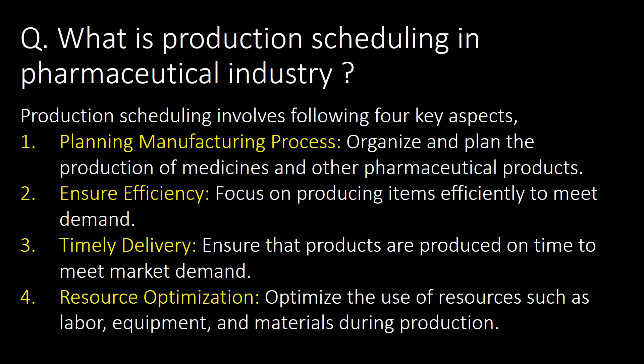What is production scheduling in the pharmaceutical industry? Production scheduling involves four key aspects: first, planning the manufacturing process — organizing and planning the production of medicines and pharmaceutical products; second, ensuring efficiency in producing items to meet demand; third, timely delivery — ensuring products are produced on time; and fourth, resource optimization — optimizing the use of labor, equipment, and materials.